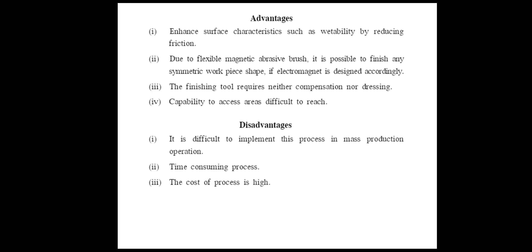It is flexible with magnetic abrasive finishing. It is possible to finish any symmetric workpiece shape if the electromagnet is designed accordingly. If we design the electromagnet properly, we can finish any machine shape. The finishing tool requires neither compensation nor dressing — we do not have wearing or contact, so no compensation or dressing is needed. Unlike grinding where we dress the tool, this process eliminates that requirement. The capability to access areas difficult to reach is an advantage over conventional tools.